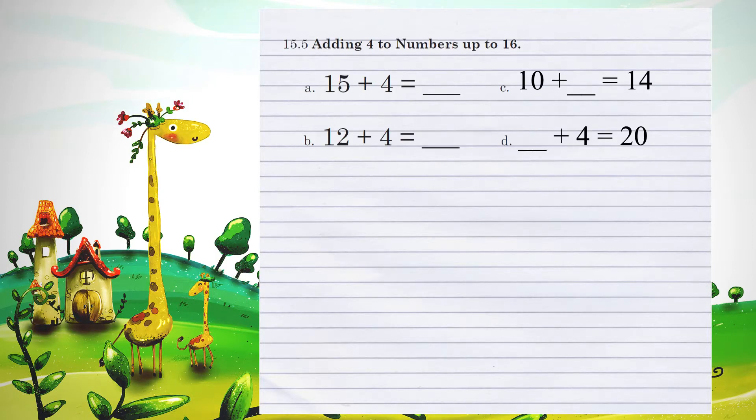Unit 15.5, adding 4 to numbers up to 16. Example A, 15 plus 4. Because we have a two-digit number here, we can take the 5, and we can add it to the 4, which are both in the 1's position, to get 9. 15 plus 4, therefore, is 19.